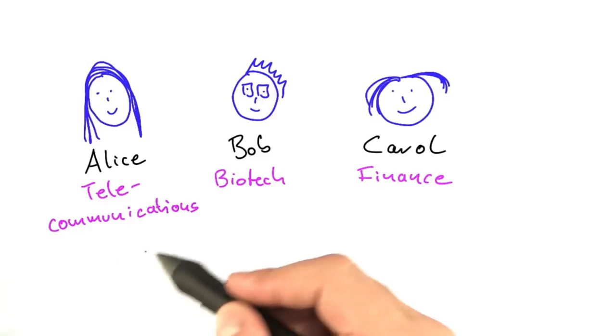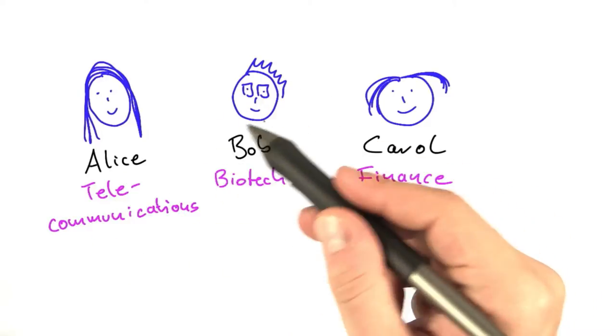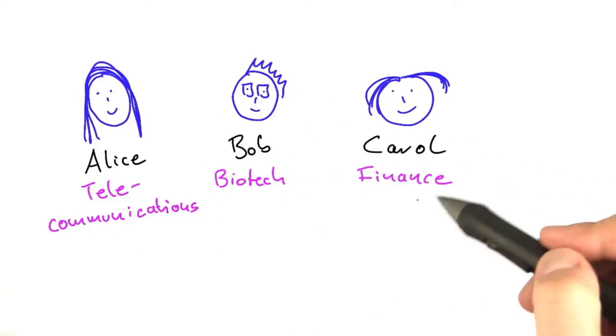Alice works in telecommunications. Bob works in biotech or bioinformatics. And Carol works in finance.